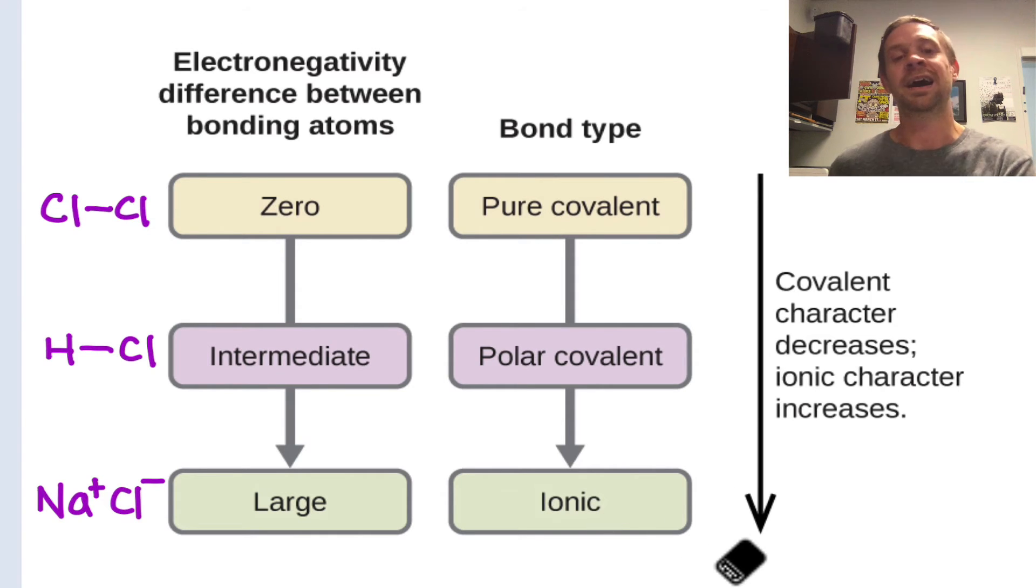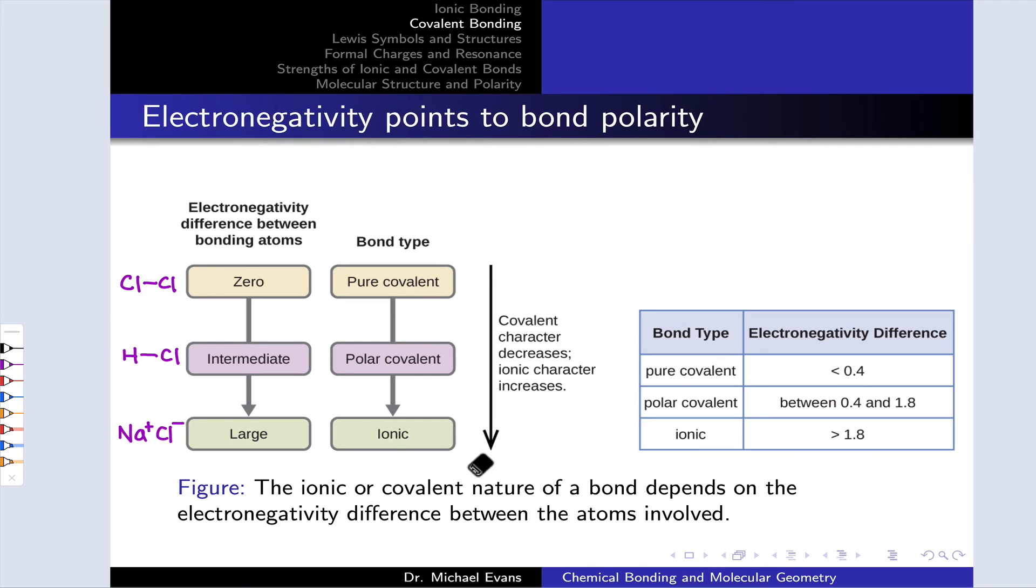At that point, we're in ionic bonding territory. Now, the thing that always gets a little confusing is where is the cutoff between pure covalent and polar covalent? Is any electronegativity difference at all sufficient to establish a polar covalent bond? If you want to be pedantic about it, yes, but generally speaking, electronegativity differences less than about 0.4 on the Pauling scale are still pretty much nonpolar bonds, or what we would call pure covalent bonds.